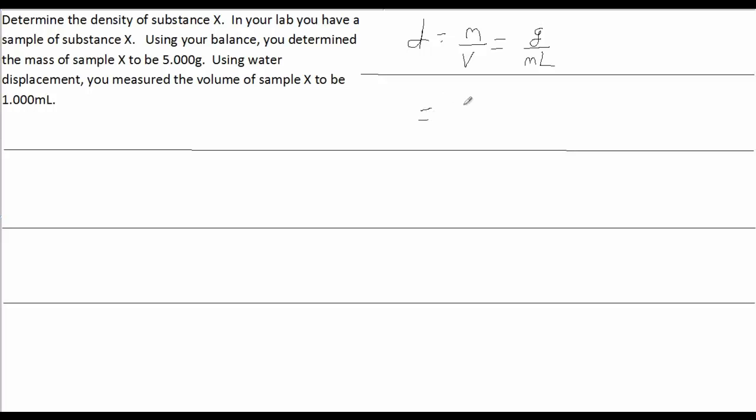In this case, we simply plug the numbers into the equation. Our mass is 5.00, and our volume is 1.000 milliliters. And therefore, the density is simply 5.000 grams per milliliter.